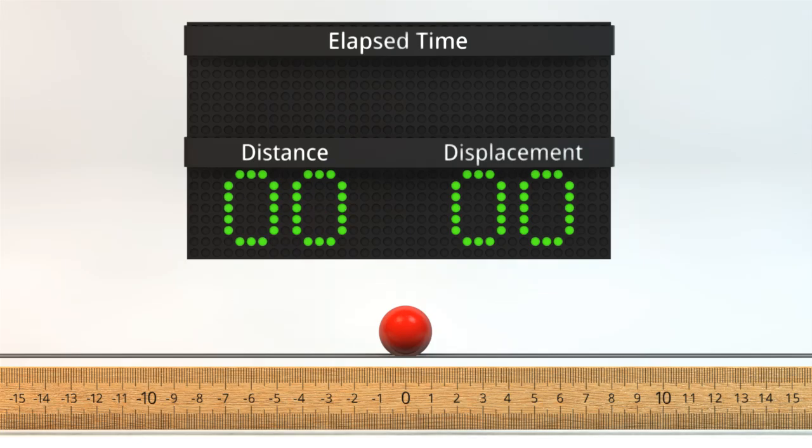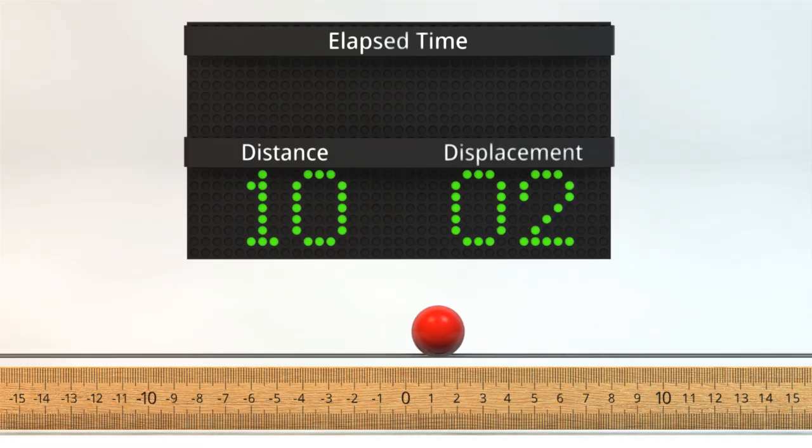Displacement tells us how far the ball ends up compared to where it started from. Look at how when the ball gets closer to zero, displacement goes down, but distance is always increasing.